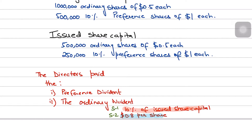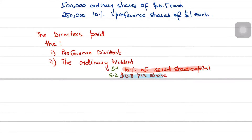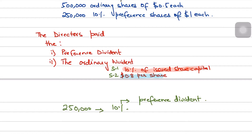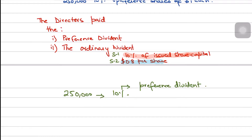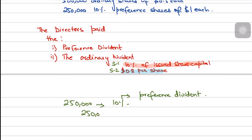Now let's calculate the preference dividend first, then the ordinary dividend based on scenario 1. The issued preference share capital is 250,000. The 10% written next to it is the preference dividend rate. To calculate it, we simply multiply 250,000 by 10%, which gives us 25,000.